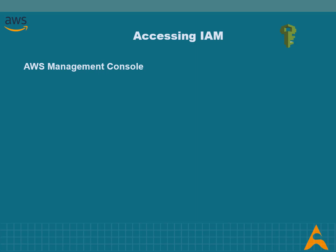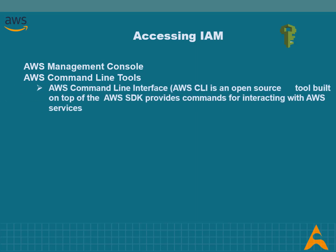To understand how IAM is accessed: IAM can be accessed via the console, which is a browser-based interface to manage IAM and AWS resources. AWS command line tools are also used to issue commands at your system's command line to perform IAM and AWS tasks. Command line tools can be faster and more convenient than the console and are useful when you want to build scripts that perform AWS tasks.